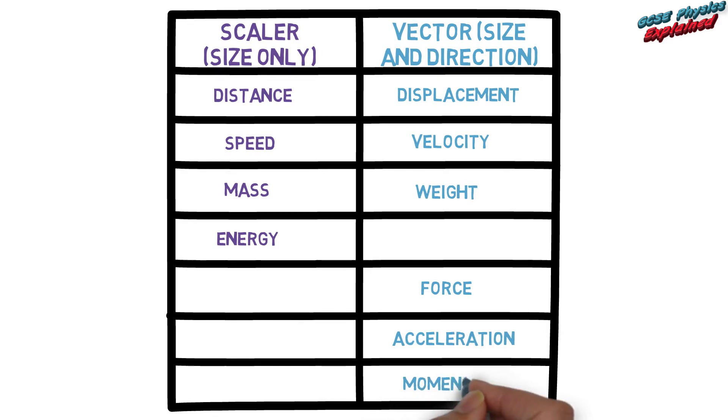Notice in the table that some scalars have an equivalent vector. For example, if you give distance a direction it becomes a displacement. If you give speed a direction it becomes velocity.